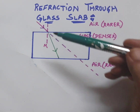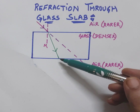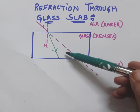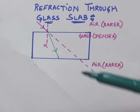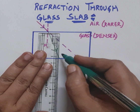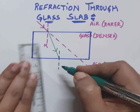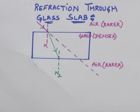The bending occurs two times: one at the entry point where it enters the glass slab, and second at the exit point. There is also a change in medium here — it is entering from the denser medium, that is glass, into air, which is a rarer medium. I am drawing the normal here — this is normal number two.